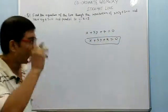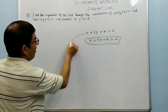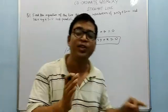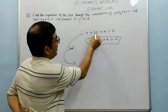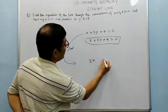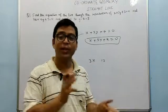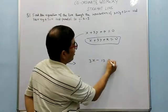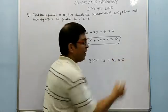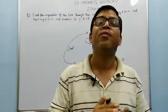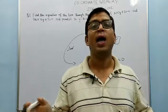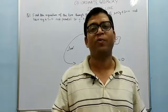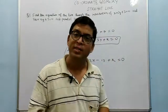Now for a line perpendicular to a given line — suppose perpendicular to x plus 3y plus 7 — we exchange the coefficients of x and y. The coefficient of x is 1 and that of y is 3, so 3 goes with x and 1 goes with y. Also, the sign between x and y terms is reversed: if it is positive we write negative. The constant term is taken as k. So any perpendicular line can be written as 3x minus y plus k equal to zero. For a particular value of k we get the particular perpendicular line.